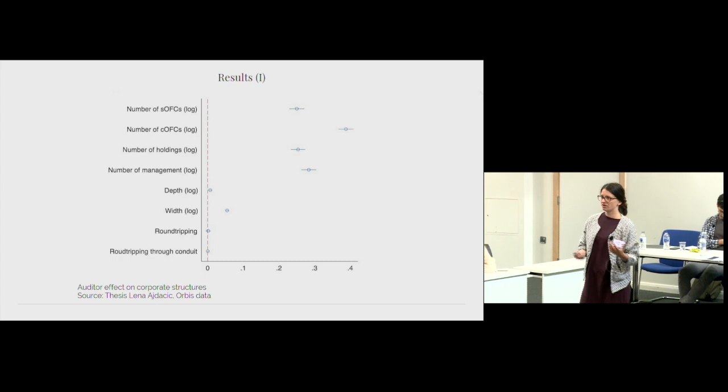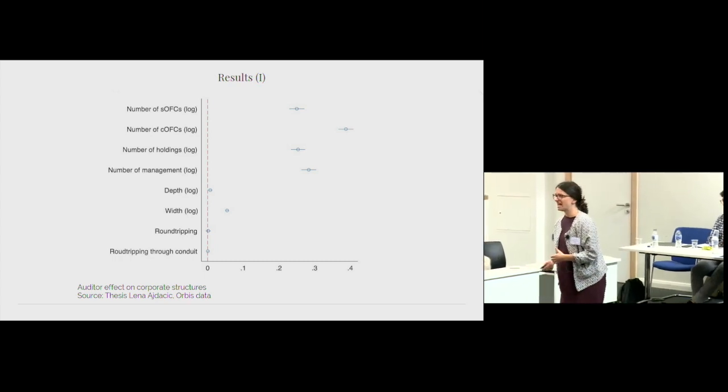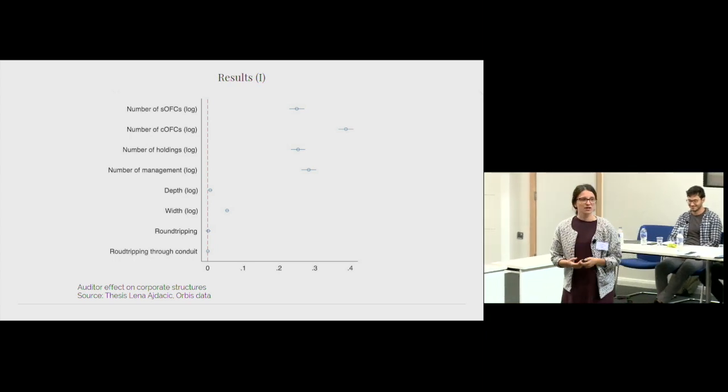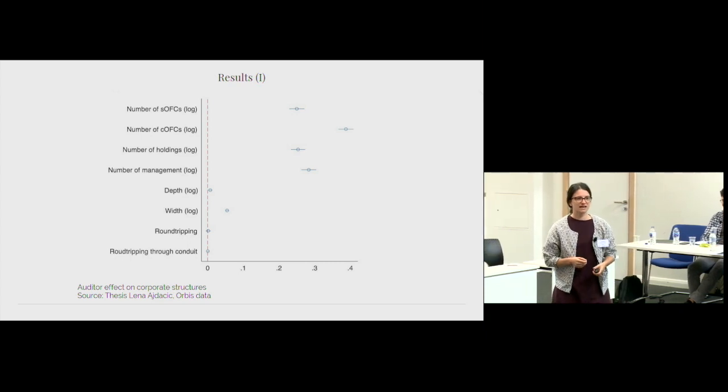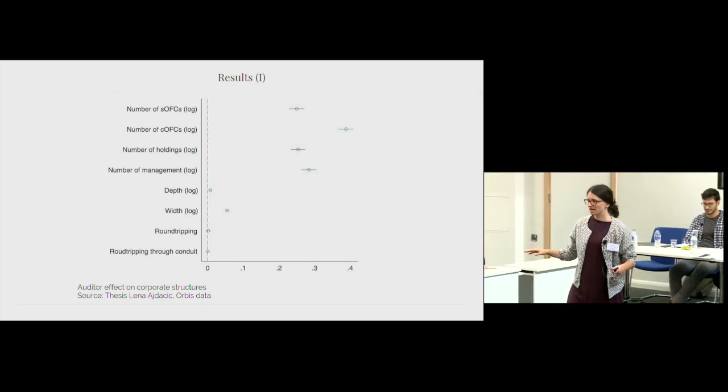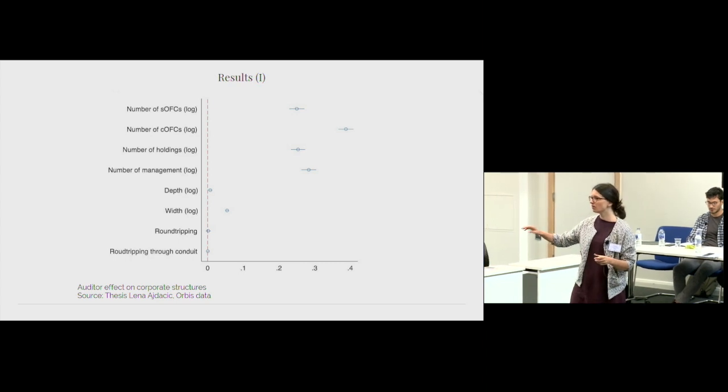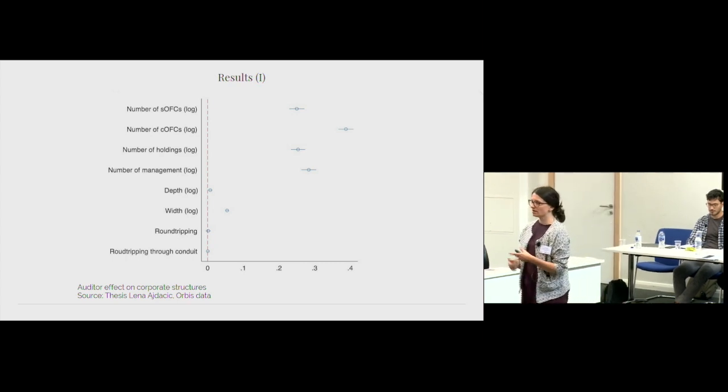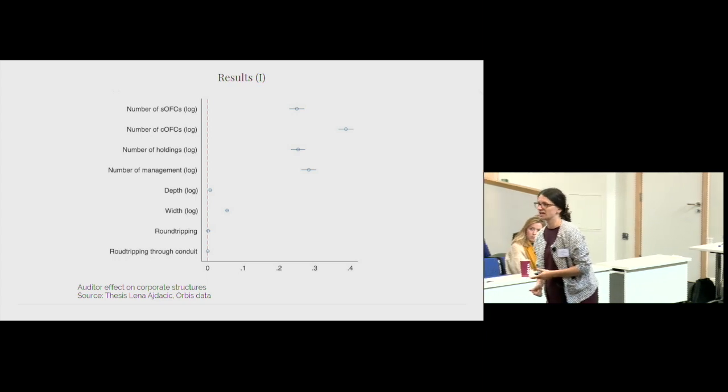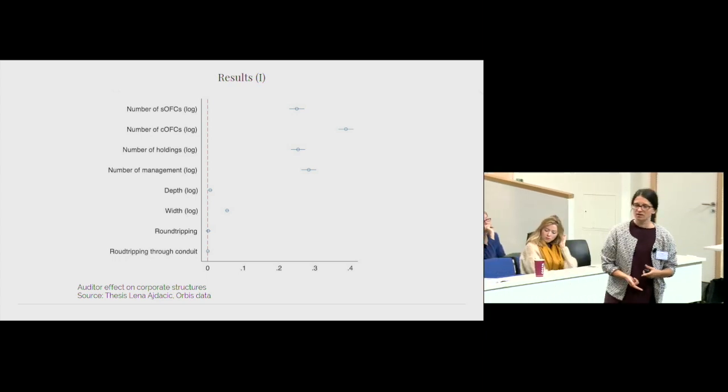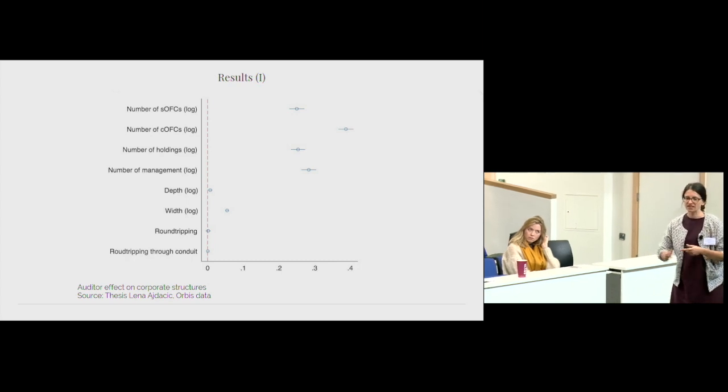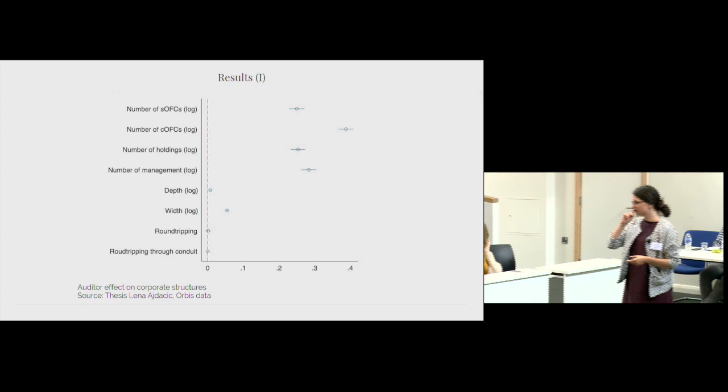So it matters whether you're audited by one of the big four or a smaller auditor. And the question is why? I don't know. But the hypothesis that we developed is that by their size and their global spread, the big four auditors are present in many more locations than smaller auditors. This gives them access to knowledge about recent regulatory changes, and it gives them access to the tax authorities in place, basically.